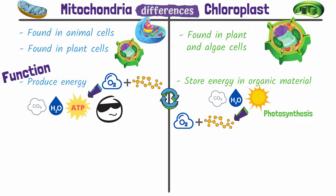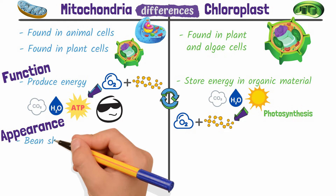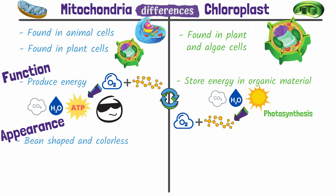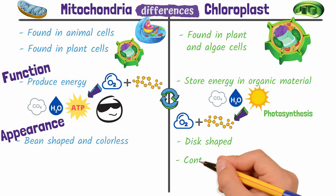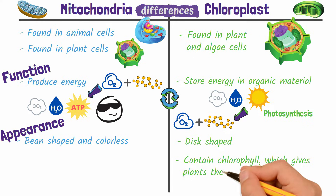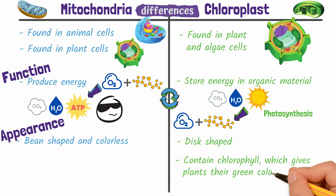The last difference we'll discuss is their appearance. Mitochondria are bean-shaped and essentially colorless. Chloroplasts, on the other hand, are disc-shaped and contain chlorophyll, which is a pigment that absorbs red and blue wavelengths and reflects green wavelengths of light, giving plants their green color. Pretty rad.